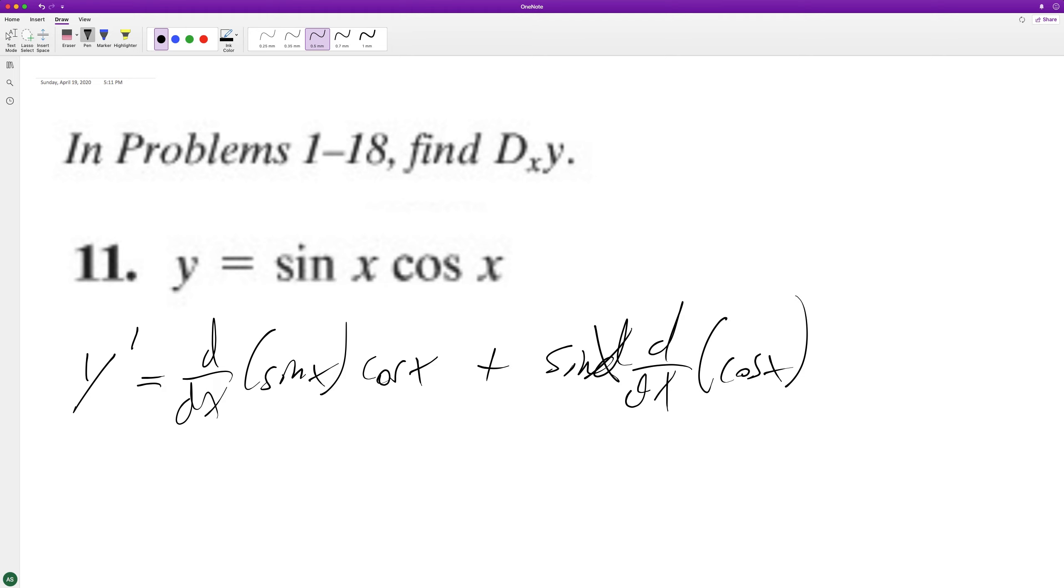So what we'll have here is this is going to become cosine of x times cosine of x, and then the derivative of cosine of x is going to be equal to negative sine of x.